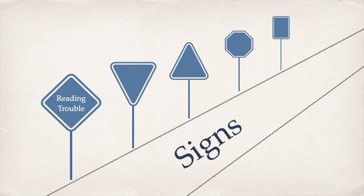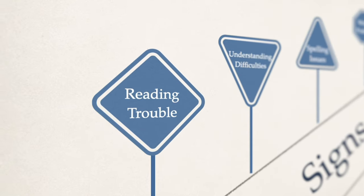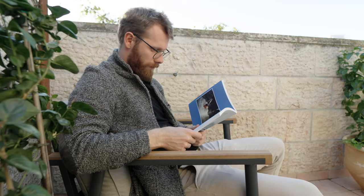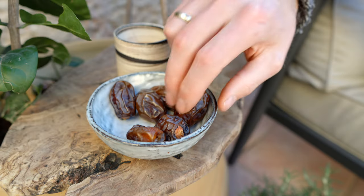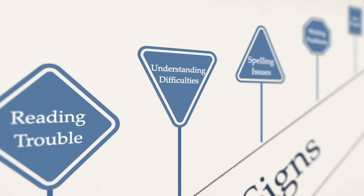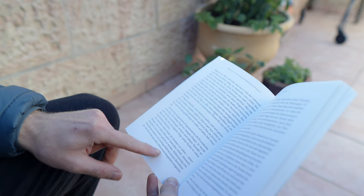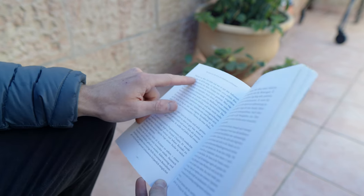Now let's take a look at the actual signs. The first area would be having trouble with reading, and this could look like reading things wrong or slowly, guessing words, or having a tough time sounding them out. Understanding difficulties is another area — you might read the words correctly, but then miss the main point or miss a connection that was pointed out. I often get to the end of the page and think, okay, I need to read this again.